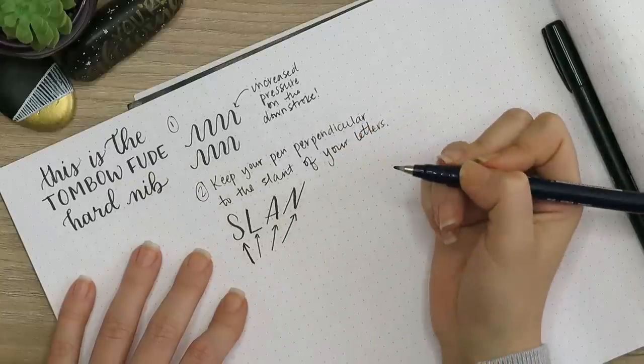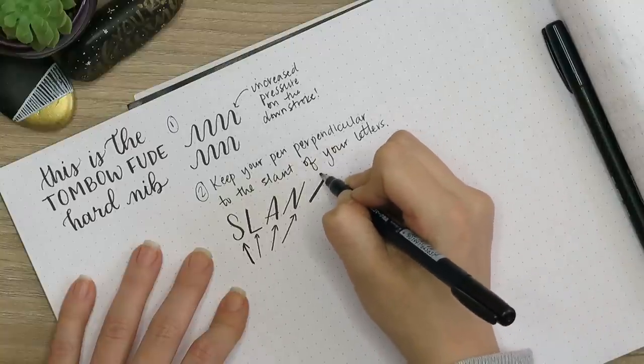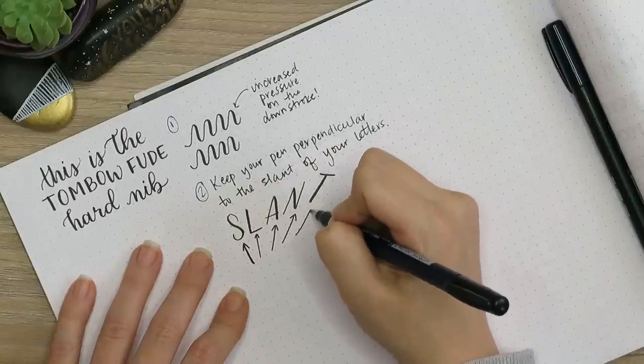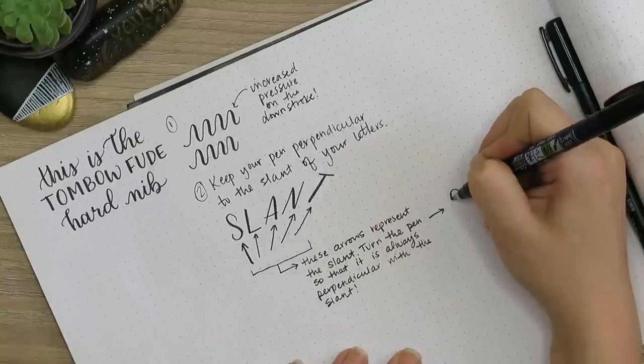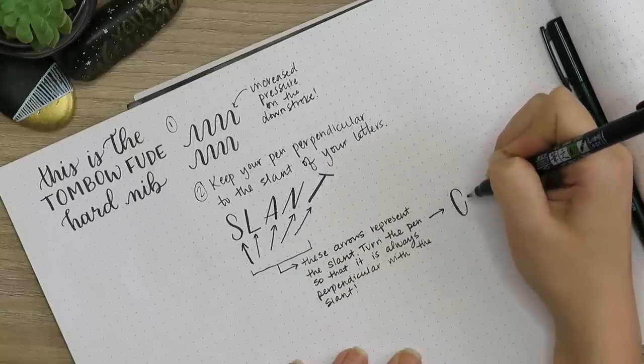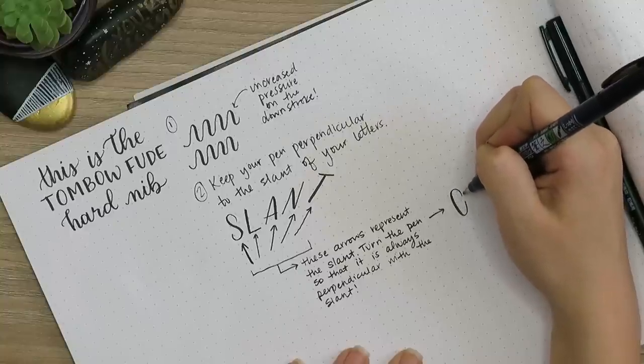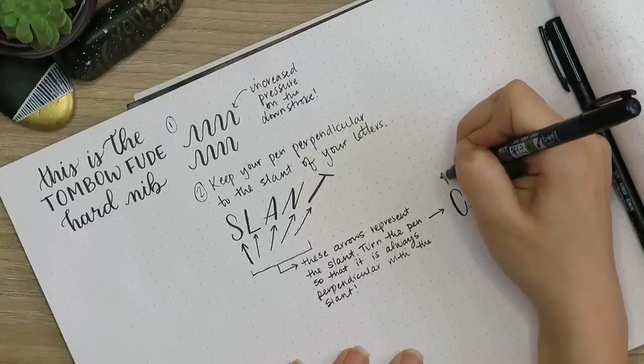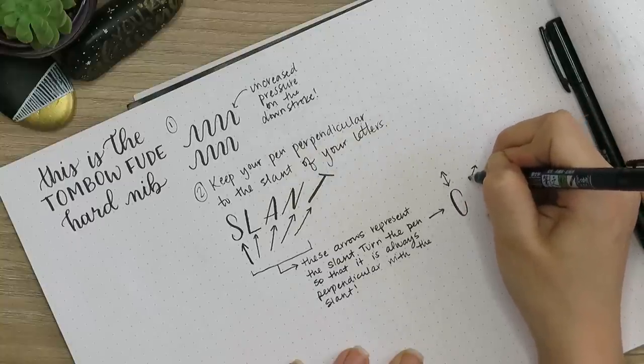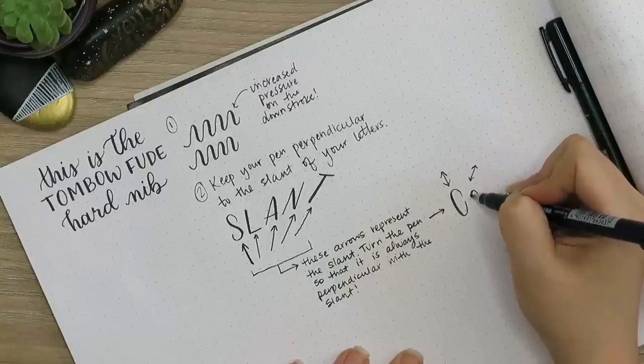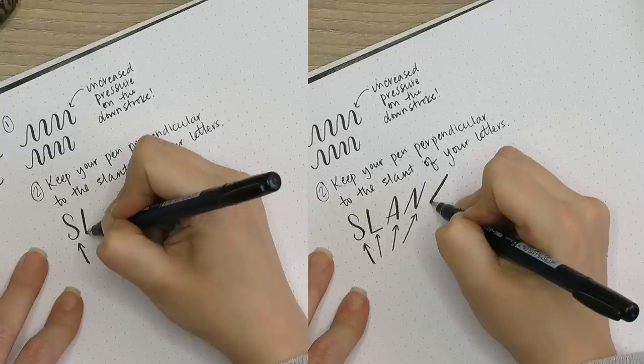If you look at these arrows, those are the angle of my slant, and I have to turn my pen to match the angle. So I'm showing you another example. When I drew the C, the slant was up and down, so I had my pen perfectly out to the side, perfectly to the side to create a 90 degree angle with a vertical slant.